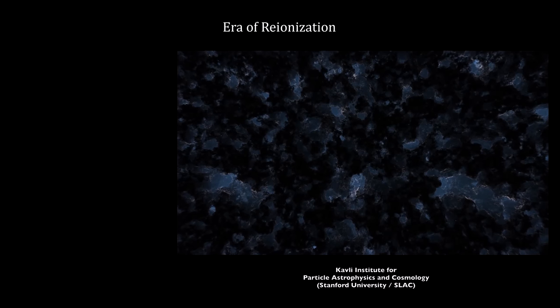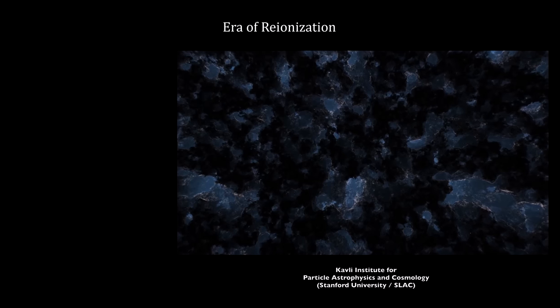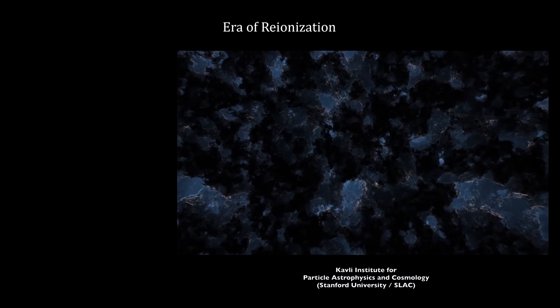Today, the universe is completely transparent, with light traveling freely over billions of years through a sea of ionized hydrogen that does not absorb light. The process that converted the universe from normal hydrogen to ionized hydrogen is called reionization.